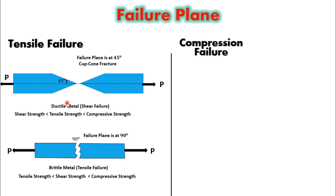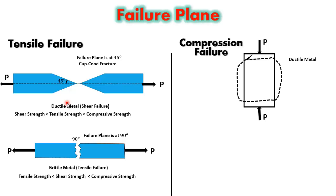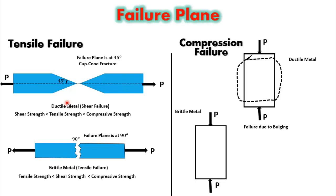Now we will discuss the compression failure. For a ductile material, compression failure is accompanied by bulging of the material. If a brittle material is subjected to compression, it will fail in shear at a failure plane of 45 degrees, with no bulging of material occurring.